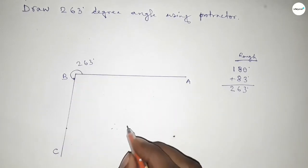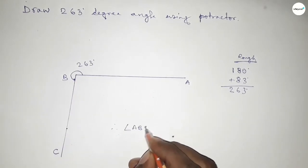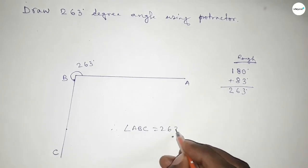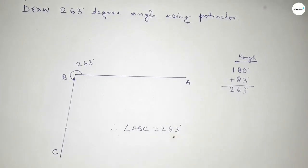Therefore, angle ABC equal to 263-degree angle. That's all, thanks for watching. If this video is helpful to you, then please share it with your friend. Thanks for watching.